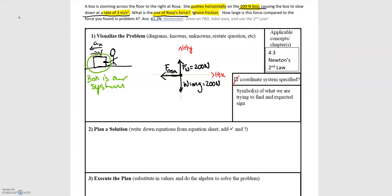Now I'll include the last bit of information about the acceleration of the box. The box is moving to the right but slowing down, so the acceleration must be to the left — in the negative x direction. So we have an acceleration of negative 3.0 meters per second squared. We're looking for the magnitude of Rosa's force, F Rosa, which will be a positive number in Newtons.